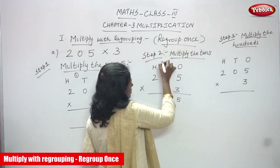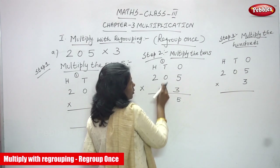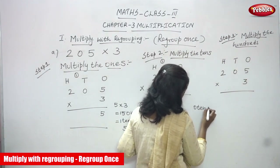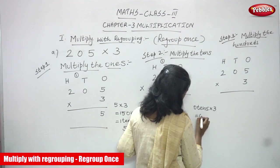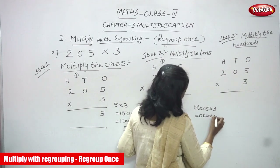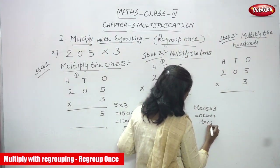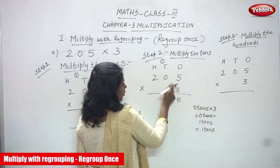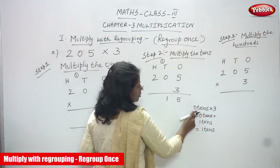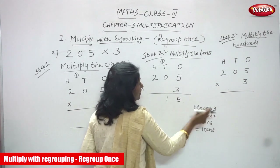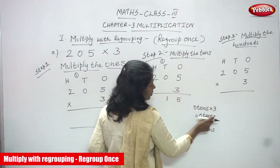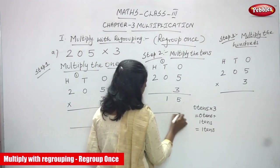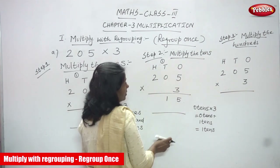Step two: multiply the tens. The number in the tens place is zero. Zero tens multiplied by three gives zero tens. Then add the carry over of one ten: zero tens plus one ten equals one ten. So you write 1 in the tens place. There is no carry over for hundreds.